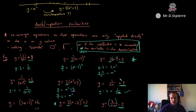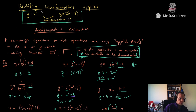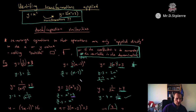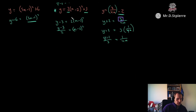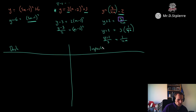This rearrangement sets us up to much more easily identify the transformations that are applied. We're given a starting function, we're given the end function, and all of these that we've just rearranged are our end functions. Let's do some examples of actually finding the transformations — we'll do the dash method on one side and inspection on the other.